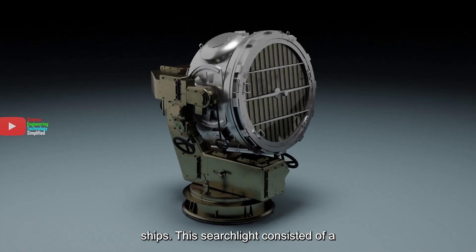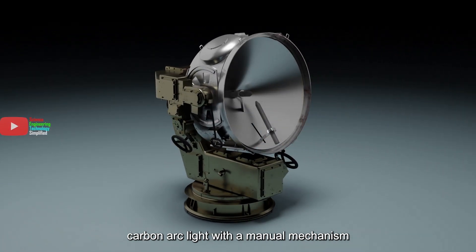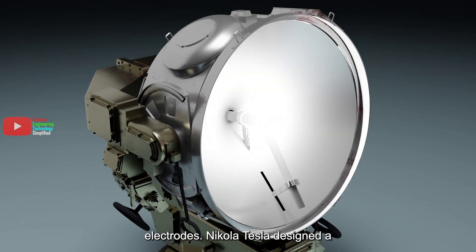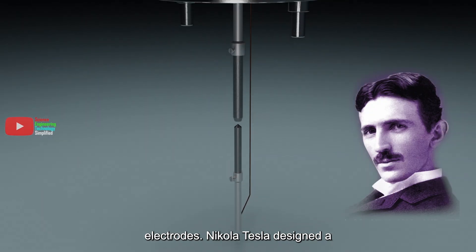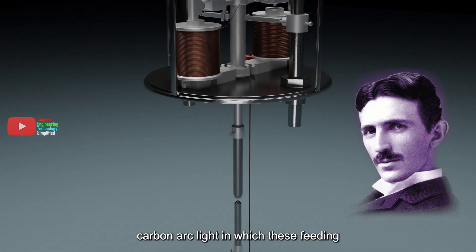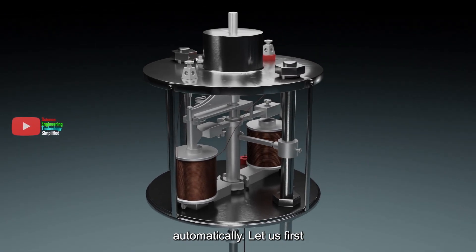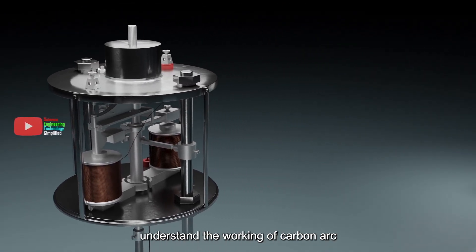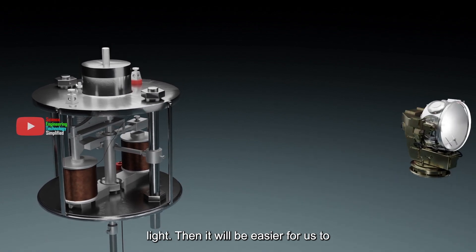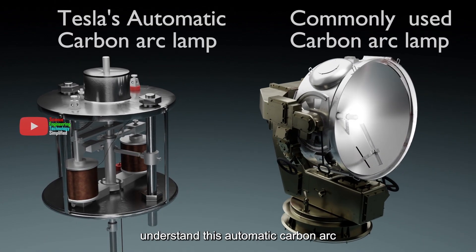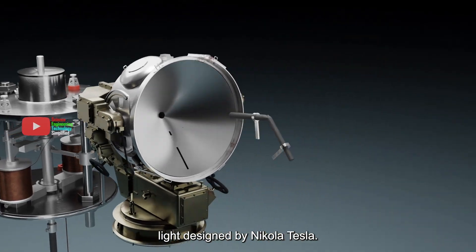This searchlight consisted of a carbon arc light with a manual mechanism for striking and feeding the carbon electrodes. Nikola Tesla designed a carbon arc light in which these feeding and striking mechanisms were done automatically. Let us first understand the working of carbon arc light, then it will be easier for us to understand this automatic carbon arc light designed by Nikola Tesla.